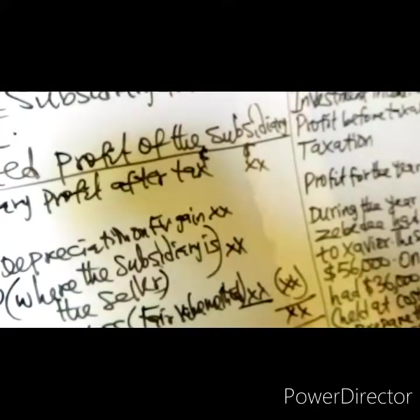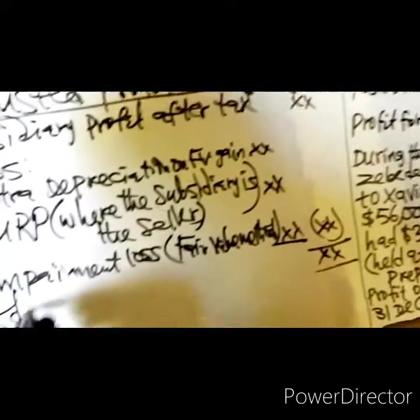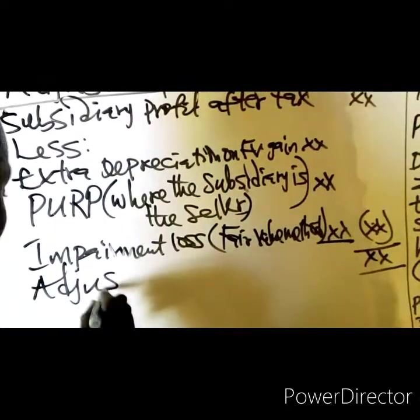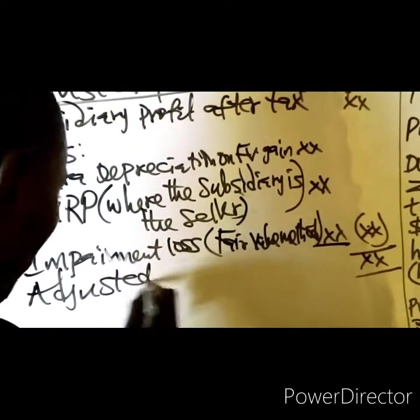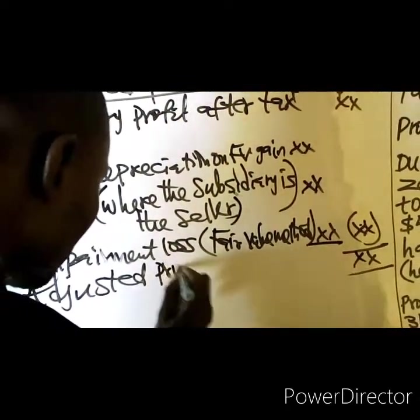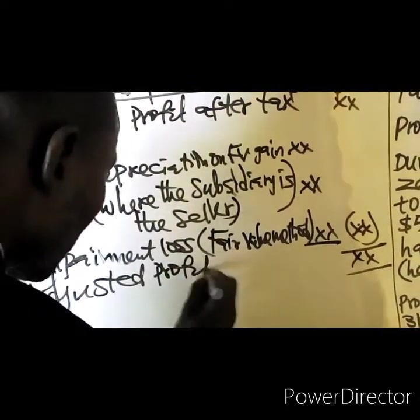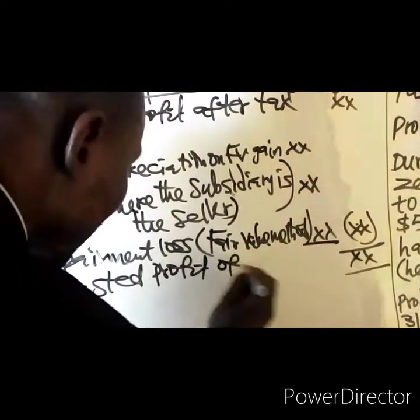After these deductions, you have the adjusted profit of the subsidiary.